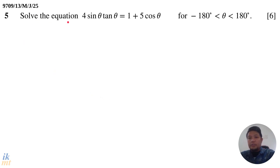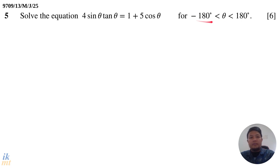Solve the equation for sine theta: tangent theta equals 1 plus 5 cosine theta, for theta between negative 180 degrees to 180 degrees. This is a 6 mark question.